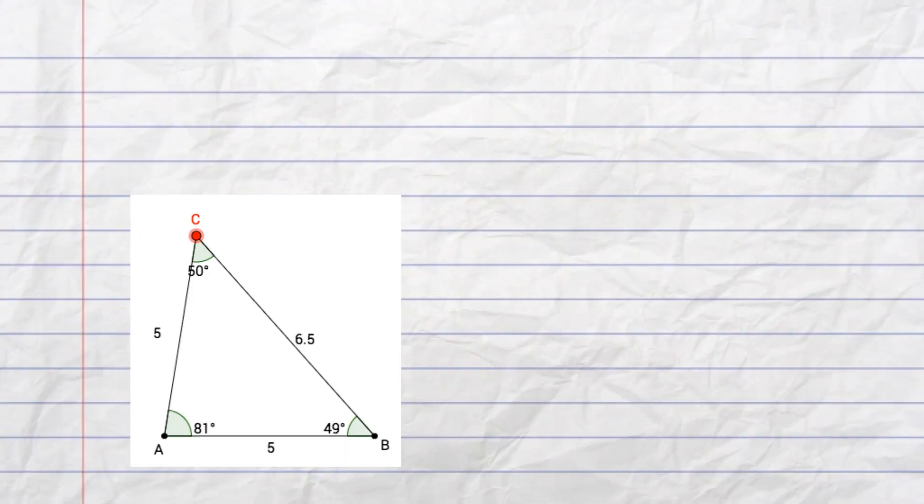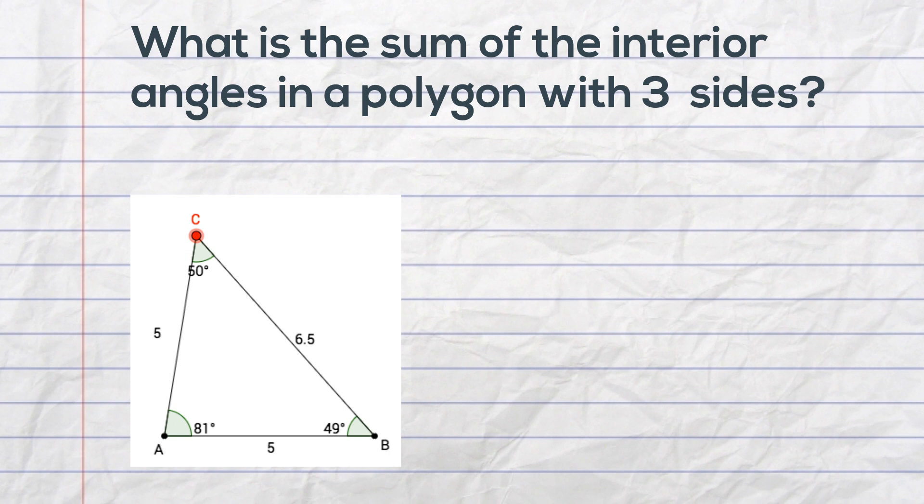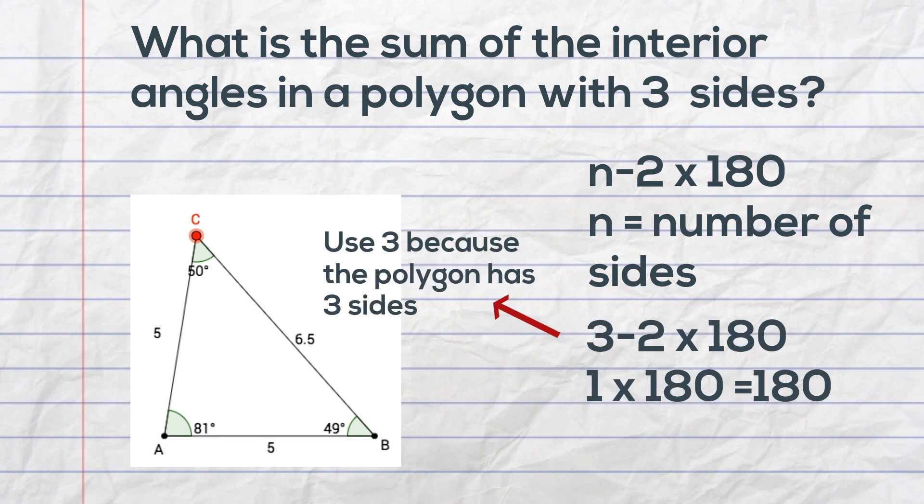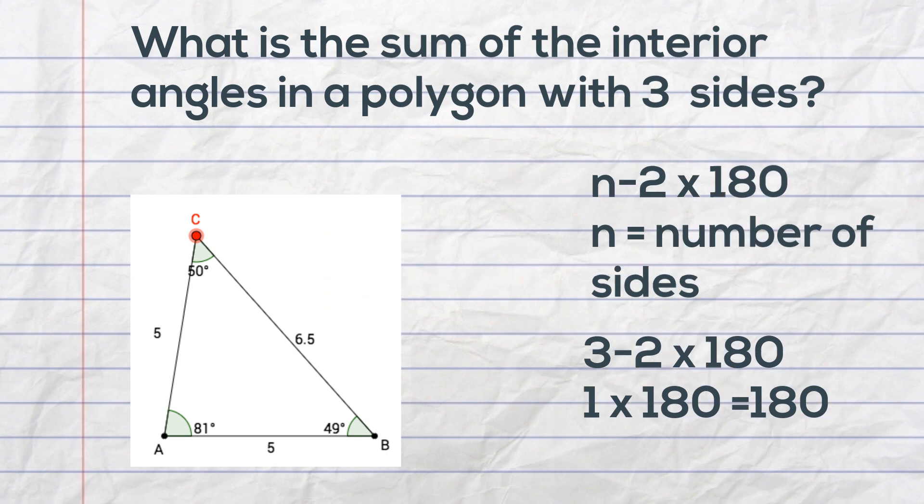In this first sample, let's calculate what is the sum of the interior angles in a polygon with 3 sides. Use the formula n minus 2 times 180. So 3 minus 2 is 1 and 1 times 180 is 180. So a 3-sided polygon or a triangle has an interior angle measure of 180.